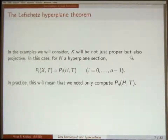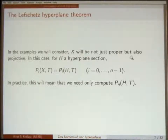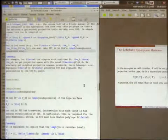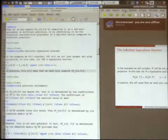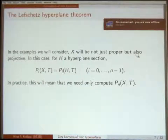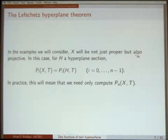So really, you only need P_0 up to P_n. But when i is less than n, P_i of X is the same thing as P_i of a hyperplane section. So in practice, what this means is typically all the hard work is determining the middle cohomology, the middle factor P_n. So in practice, we only need to compute P_n, the middle degree term.